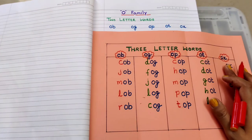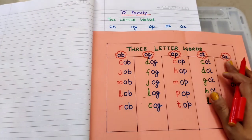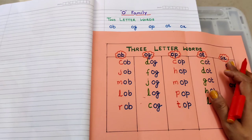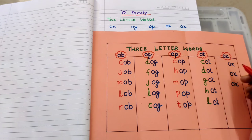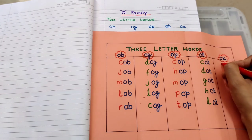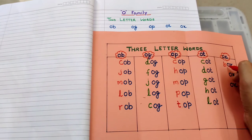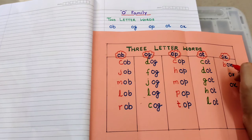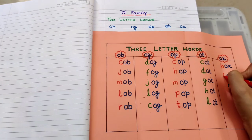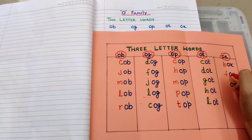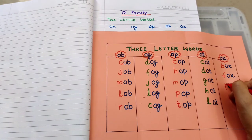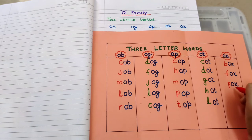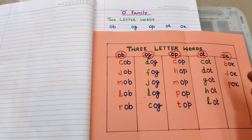Now last rhyme here I have written is 'ox'. In the ox rhyme we will also add beginning letters to form three-letter words. I am adding B as a beginning letter - 'b-ox', box. Then I'm adding F - 'f-ox', fox. And the last letter I'm adding as a beginning letter P - 'p-ox', pox.